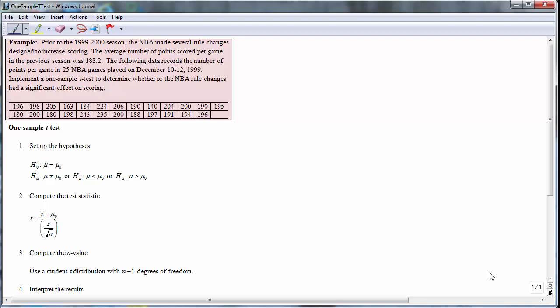Conduct a one-sample t-test to determine whether or not there was a statistically significant improvement in scoring. The key to implementing the one-sample t-test is to determine a reference value or baseline. In this example, the baseline is the previous year's average score of 183.2 points per game. If the scores in 1999 are greater than 183.2, then scoring has improved.